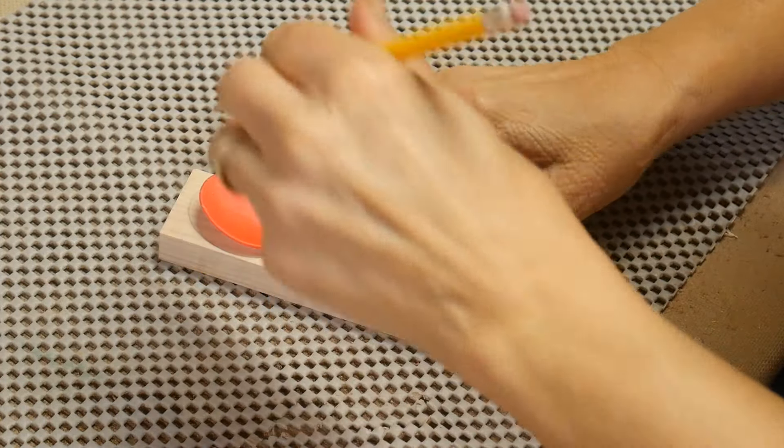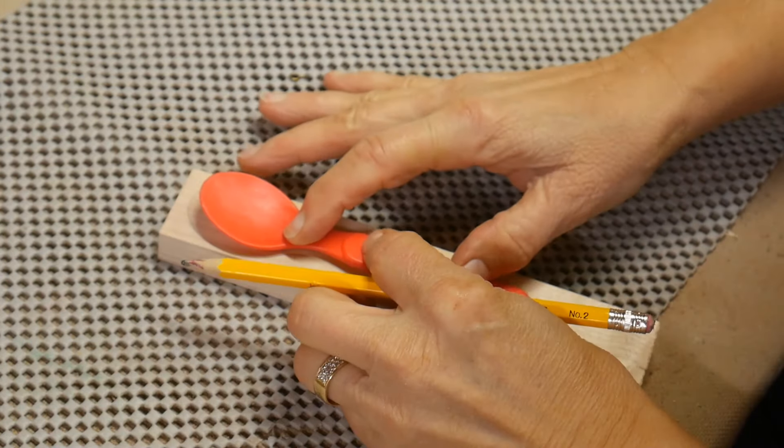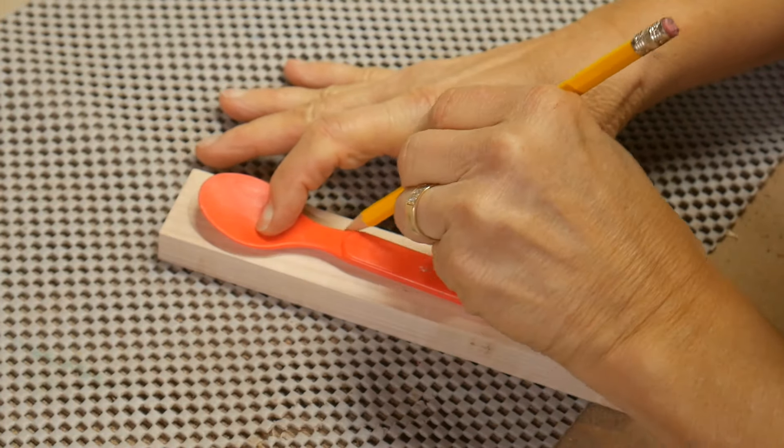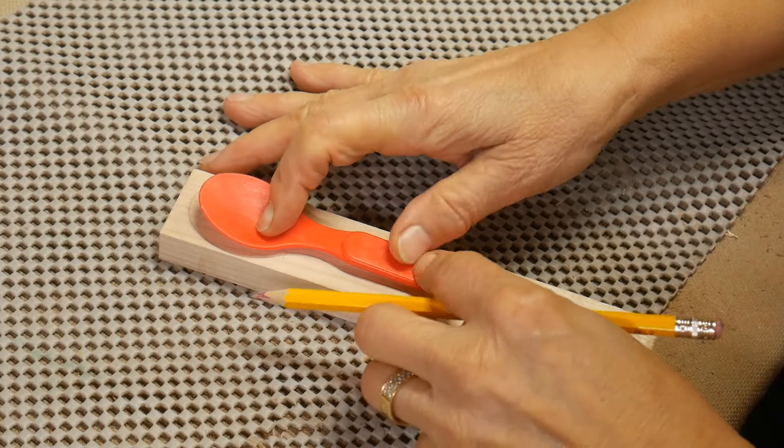Now a lot of your scroll saws will cut 1 and 7/8 inch to 2 and a half inches. So make sure you're not making it wider than what you can cut on your scroll saw.